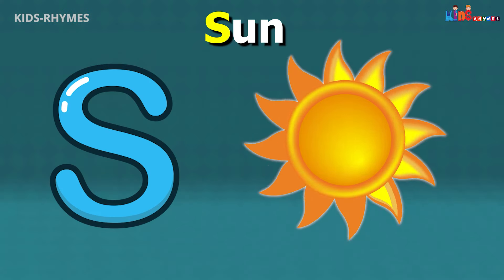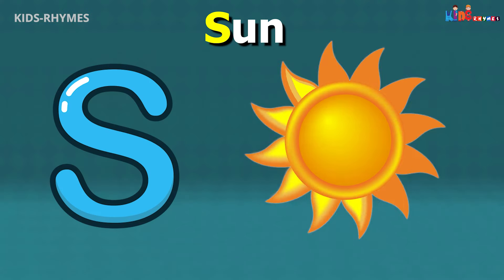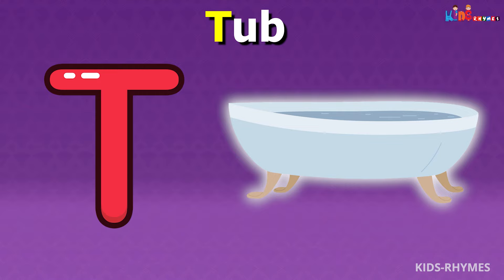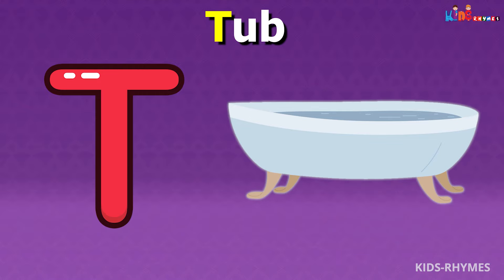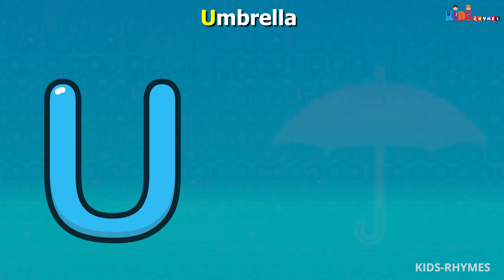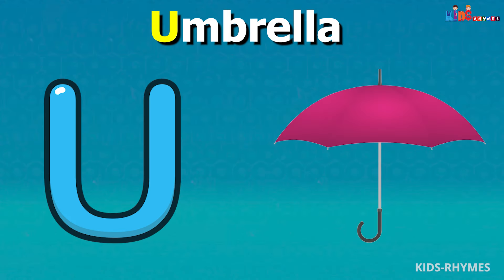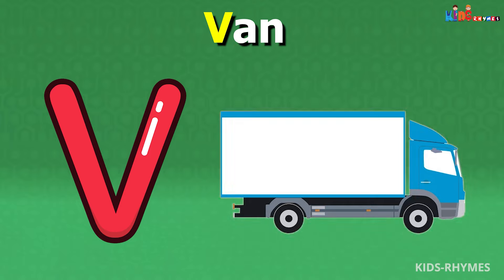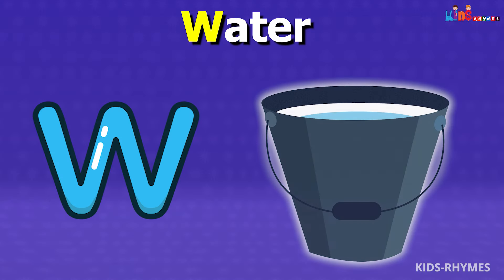R for rose, S for sun, T for tub, U for umbrella, V for van, W for water.